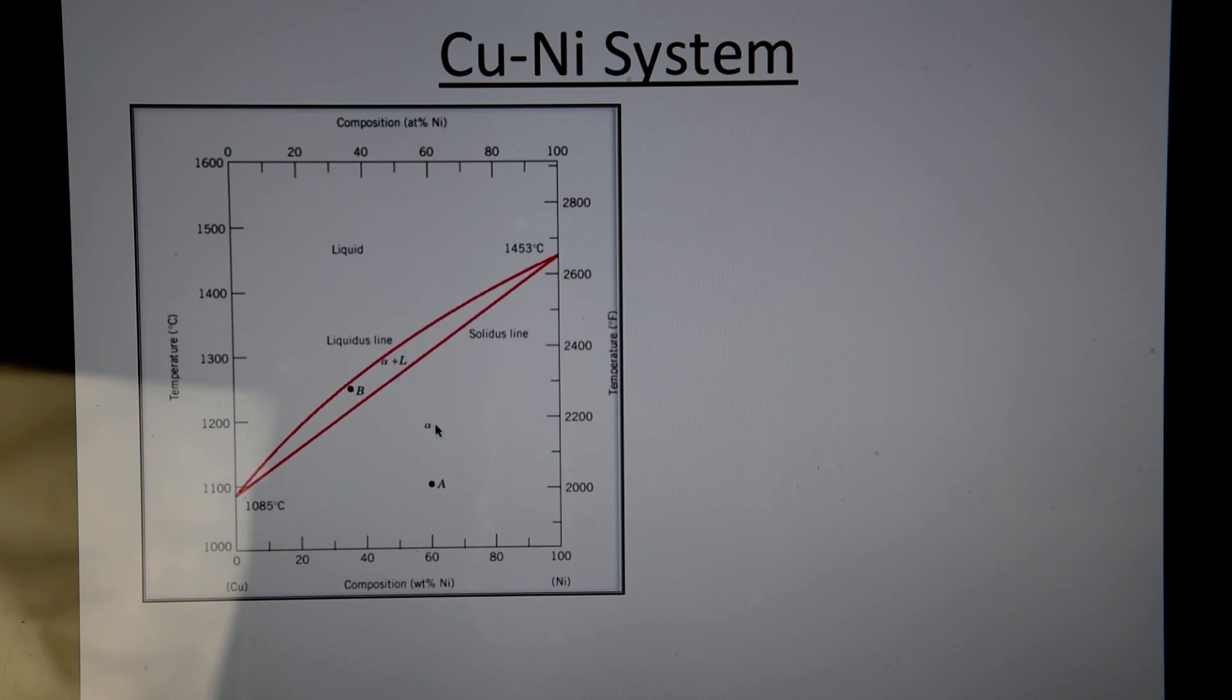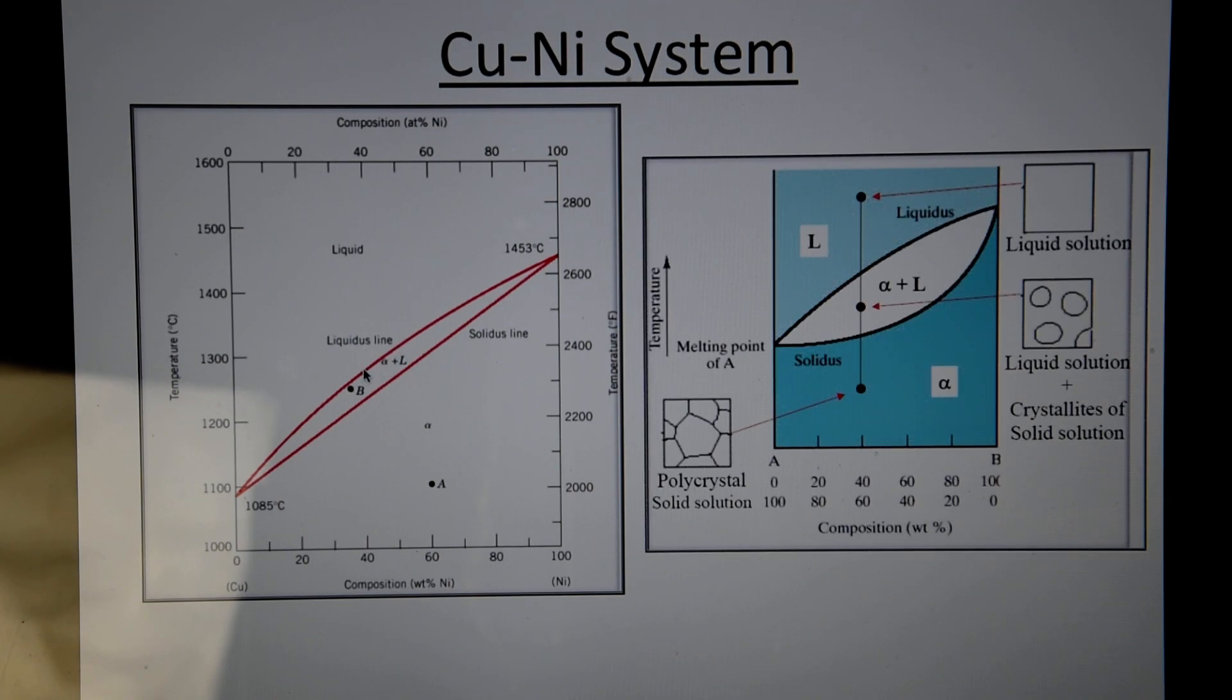And this line here, which separates the alpha region from the alpha plus liquid, is known as the solidus line. And this line here, which separates the liquid region from alpha plus liquid, is known as the liquidus line. Now if you look at the microstructure, which is present here,